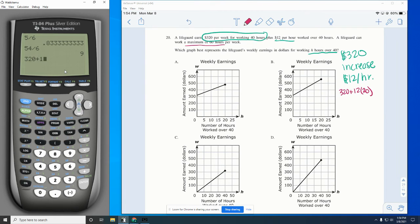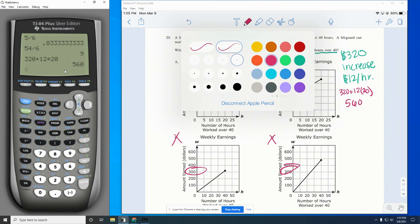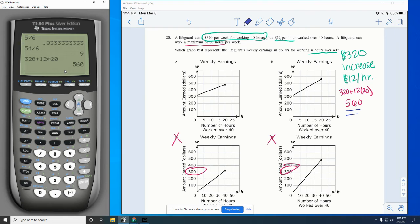So on my calculator, that would be a grand total of $560. So if we look at my graphs, C and D are automatically out because they don't start with working over 40 hours at $320 as A and B do. And then I'm just looking for which of these has the correct ending number. And that's going to be answer choice B because that one's about $560. Answer choice A has it at about $480 maybe. So that one's kind of a lot of words, but all you're really doing is finding the graph that matches.